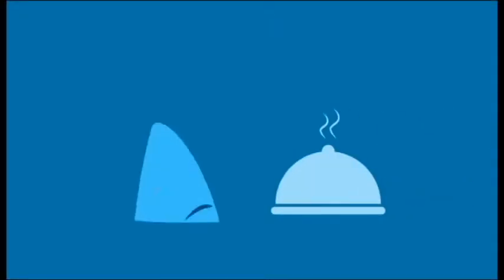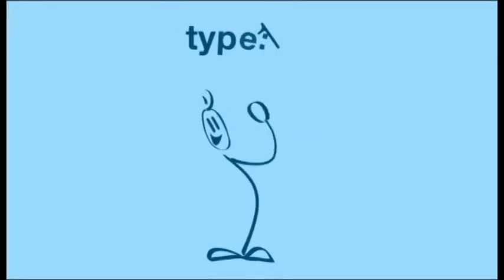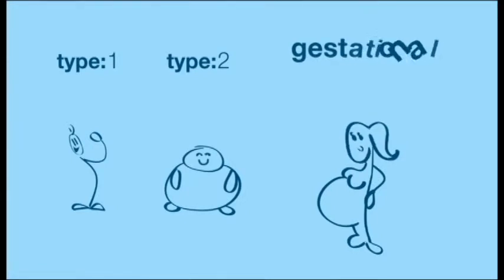There are three types of diabetes. In type 1, the body doesn't produce insulin. In type 2, the body doesn't produce enough insulin for proper function. And finally, gestational diabetes affects females during pregnancy.